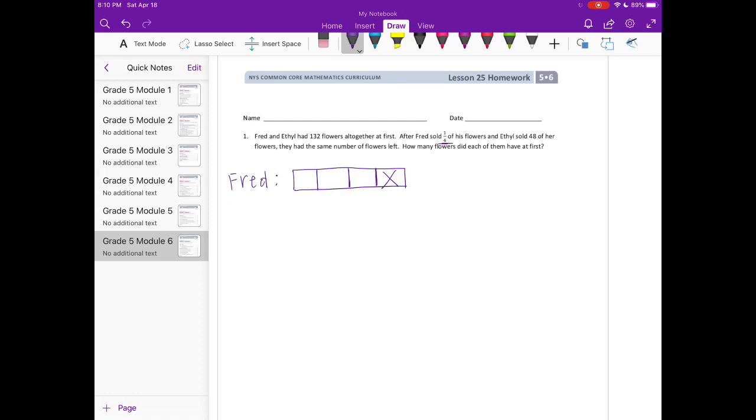Ethel sold 48 of her flowers. They had the same number of flowers left. So after Fred sold this fourth and Ethel sold 48 of hers, they had the same. So Ethel had the same amount of flowers as Fred, this portion right here after she sold 48. So she sold that 48 and then she had the same amount of flowers as Fred. So theoretically we could partition this into fourths just like we did above with Fred, and we would have the same amount of flowers.